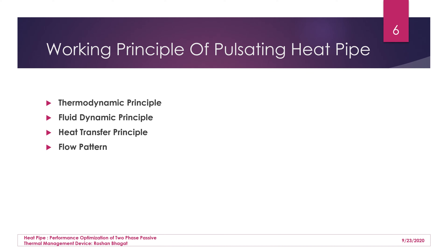The flow pattern in a pulsating heat pipe cannot be predicted — it can start from any direction, and the direction of pulsating action can change within the same setup for different experimental runs. It is not necessarily clockwise or anti-clockwise; it entirely depends on the difference in pressure and densities of the fluid between the evaporator and condenser sections.